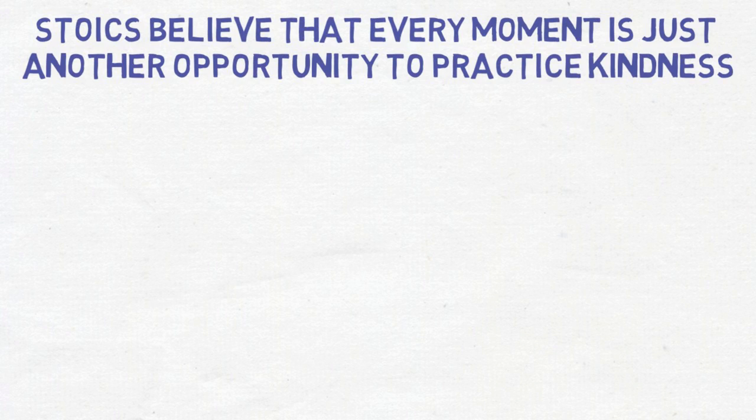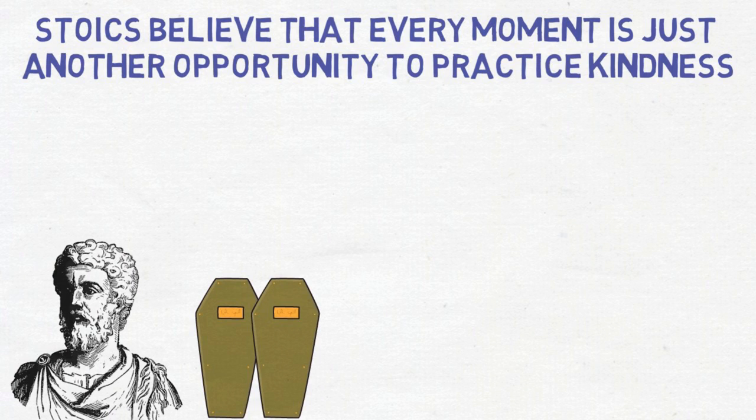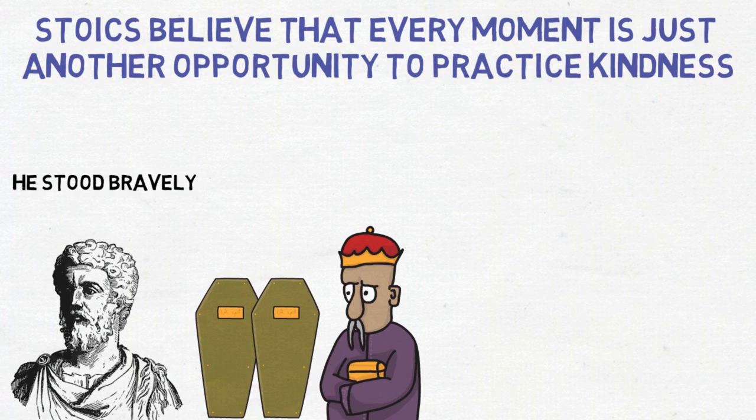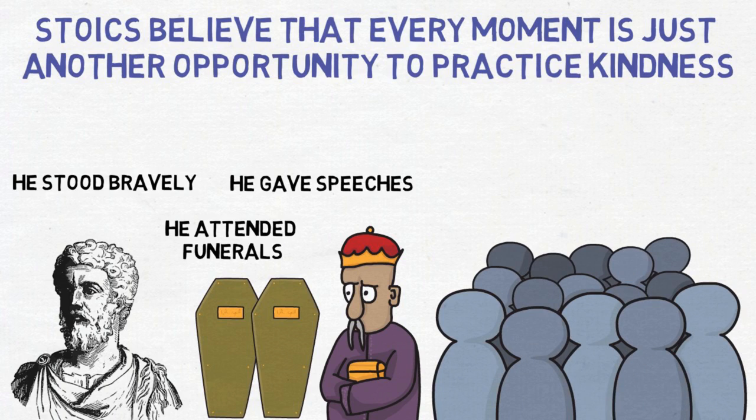When plague and famine hit the empire, dead bodies started to pile up and even when all the richest people in the empire fled, Marcus Aurelius decided to stay in Rome. He stood bravely and did everything he could, summoning priests of every sect and doctors of every speciality, touring the empire in an attempt to purge it of the plague, using every purifying technique known at the time. He attended funerals, gave speeches, showed up for his people, assuring them that he did not value his safety more than his responsibility. He kept himself strong for others.